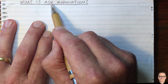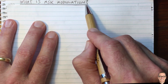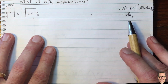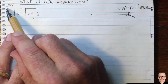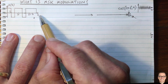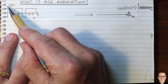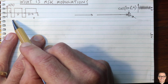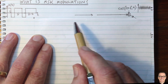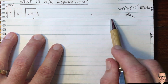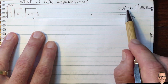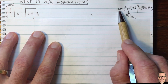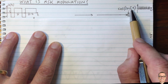What is minimum shift keyed modulation in digital communications? Let's look at a basic digital communication system. Here we have a digital data waveform which takes values of either plus one or minus one, representing digital ones and zeros. In a basic communication system, we take this waveform and multiply it by a carrier waveform, which is a cosine waveform at the carrier frequency.